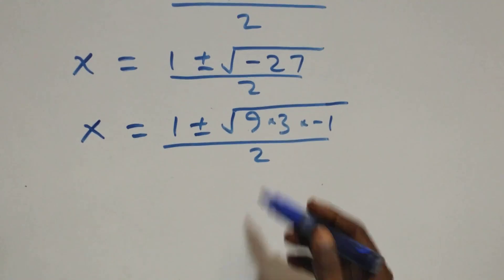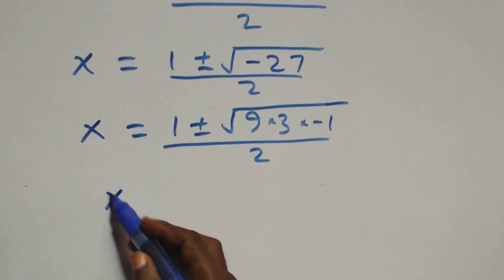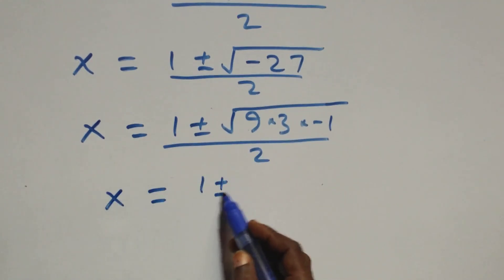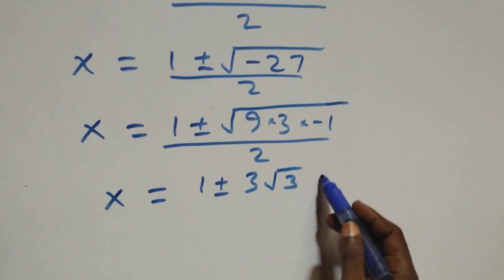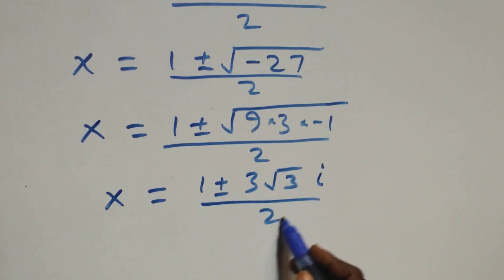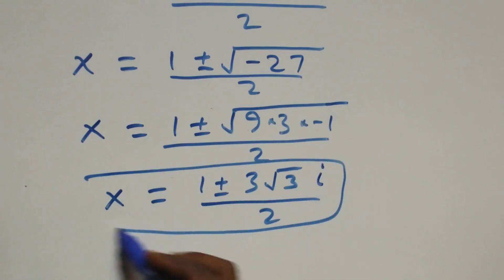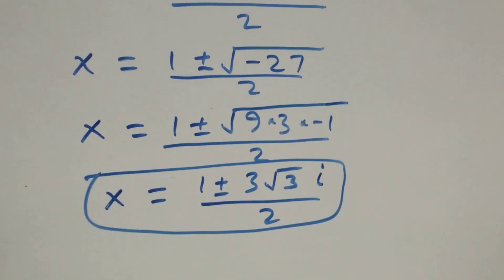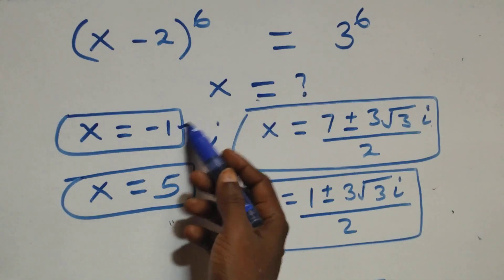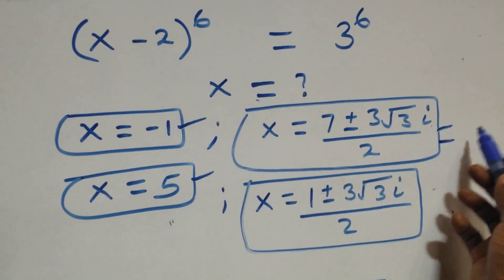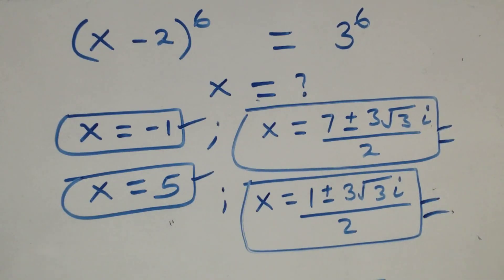Separating root 9 as 3, we get x equals 1 plus or minus 3i√3 over 2 — two more complex solutions. Therefore, all together in this problem we have 6 solutions: 2 real solutions and 4 complex solutions (2 complex from each case).